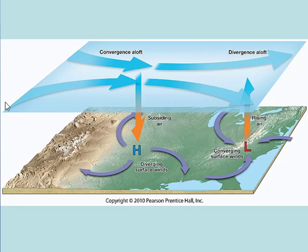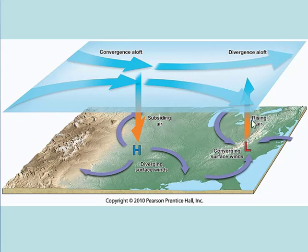Looking at converging and diverging air from a vertical perspective, the jet stream winds are highlighted with blue arrows. When winds are converging aloft, they're diverging at the surface, creating high pressure areas at the surface. When they're diverging aloft, that's because they're converging at the surface, which creates an area of relatively low pressure.